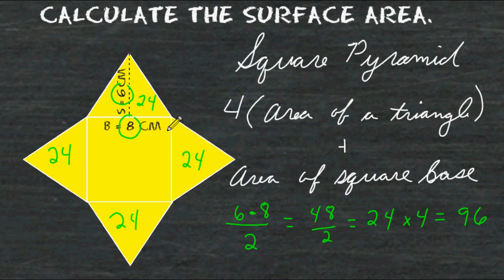Next, we can calculate the area of the square. Because the length and the width of any square is equivalent to each other, we simply multiply the length of one side by itself or raise the length of that side to the second power. And 8 to the second power is equal to 64.